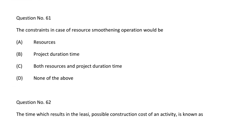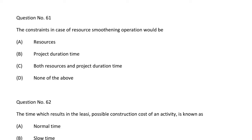Next question: the constraint in case of resource smoothening operation would be — option A resource, option B project duration time, option C both resource and project duration time, option D none of the above. The correct answer is option B, project duration time.